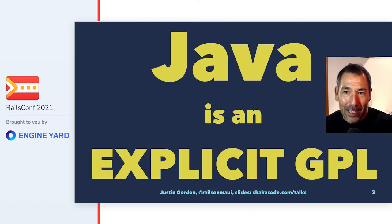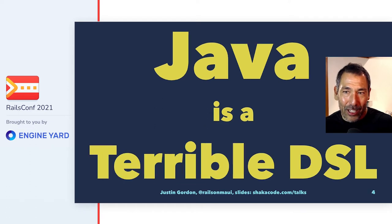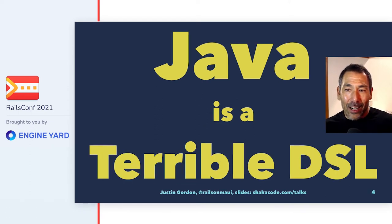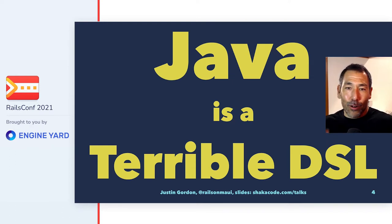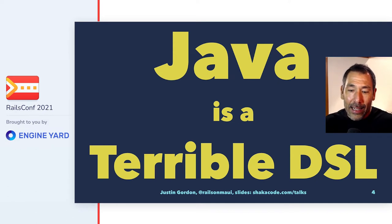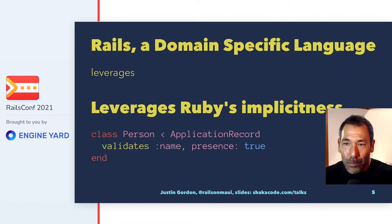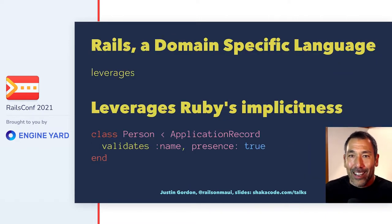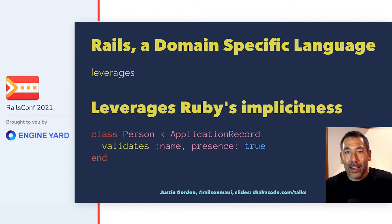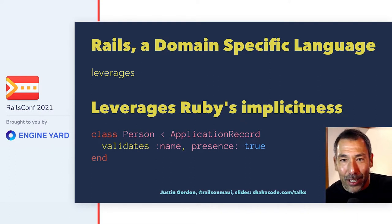Java is explicit, and that makes Java a terrible DSL. If you've ever tried to write a web application in Java, there are just so many files and so much boilerplate — it's just horrible. And that's why Ruby on Rails took off.